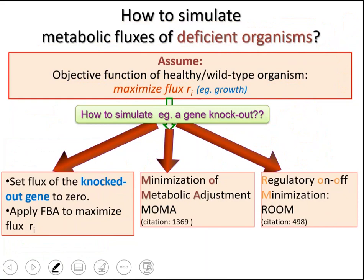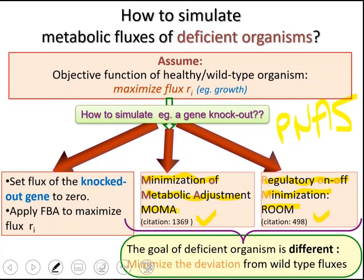One such method is known as minimization of metabolic adjustment, or MoMA. The other is known as ROOM — regulatory on/off minimization. Both studies were published in PNAS and have been cited a high number of times. Both MoMA and ROOM say that the goal — the objective — of the deficient organism is different; it is not maximizing growth anymore.